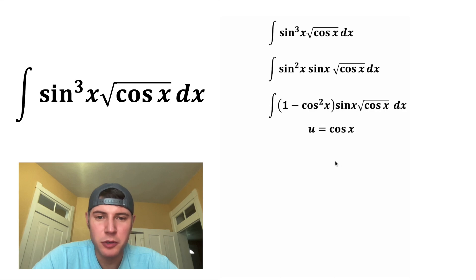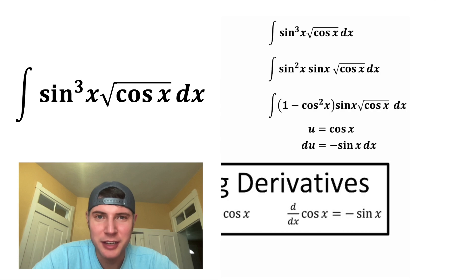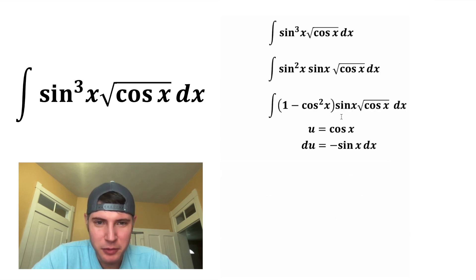We're going to let u equal cosine of x. And then using these other notes, we know that du is going to be equal to negative sine x dx. So looking up here, we have a sine x and a dx. I want to get them next to each other. And now that they're next to each other, we have a sine x dx. That's this right here.